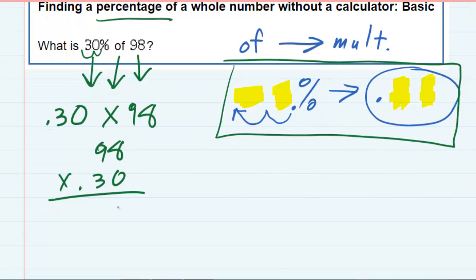And whenever we multiply by 0, it gives us 0. But when I multiply by the 3, the 3 times the 8 gives me 24. Bring my 4 down here and carry the 2. And then the 3 times the 9 is 27, plus the 2 gives me 29.